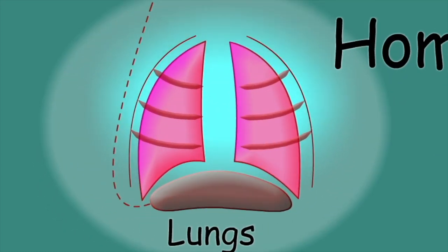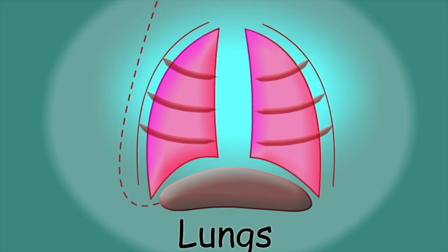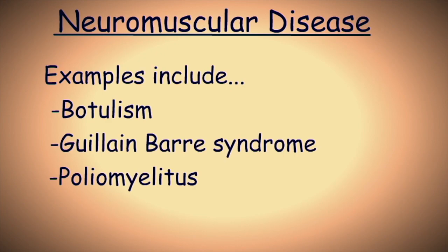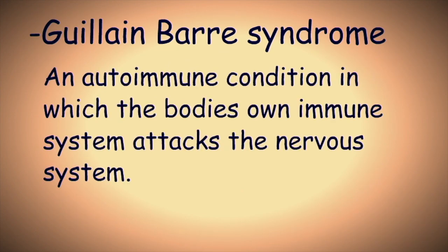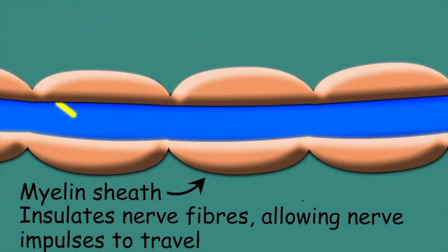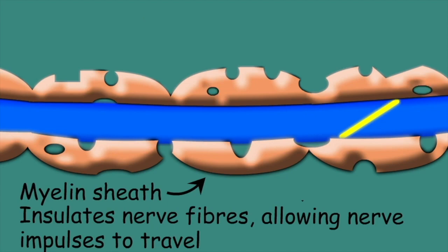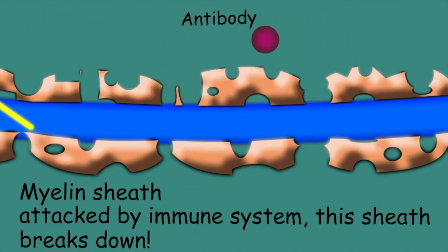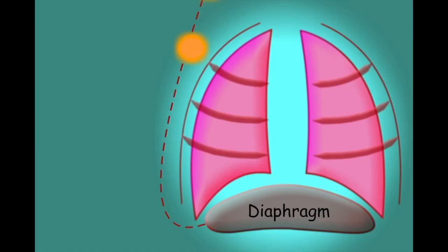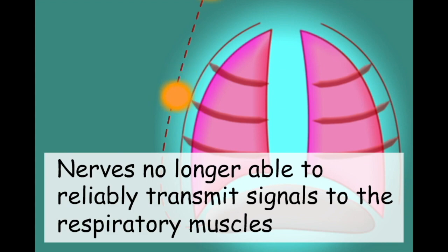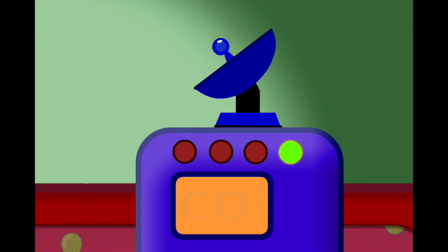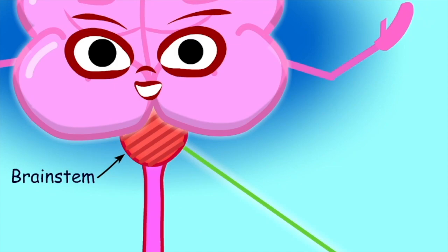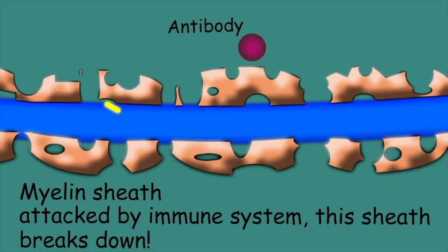Hypercapnia can also occur due to issues affecting the muscles that drive respiration. Some neuromuscular diseases can affect the function of the lungs. Guillain-Barré syndrome is an autoimmune condition in which the body's own defences attack the nervous system. The myelin sheath that insulates nerves becomes damaged, affecting the conduction of nerve impulses. In some cases the nerves responsible for controlling the respiratory muscles become affected, leading to a reduction in respiratory effort and a rise in CO2. The chemoreceptors will be able to detect this change, promoting increased stimulation of the respiratory centres. But as the nerves transmitting the signals from the brain stem have become damaged, the lungs will be unable to respond effectively.